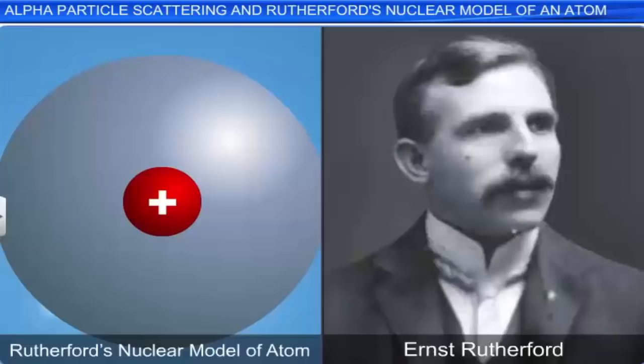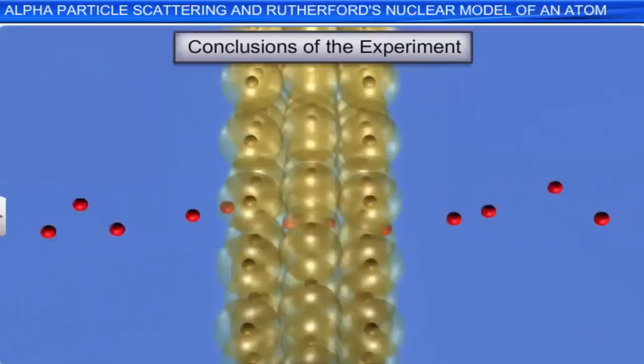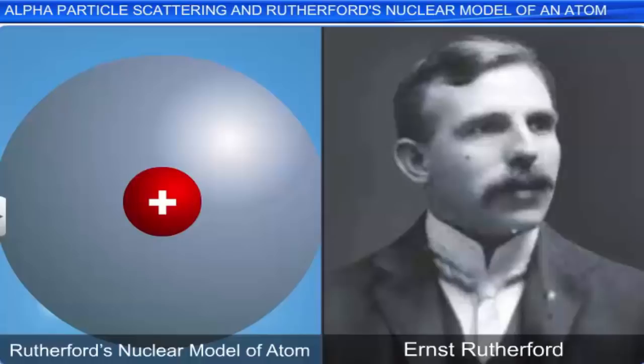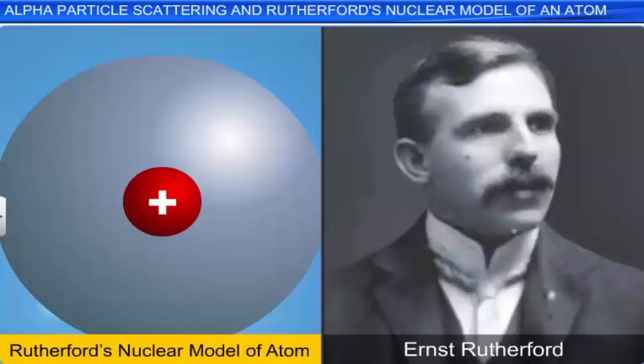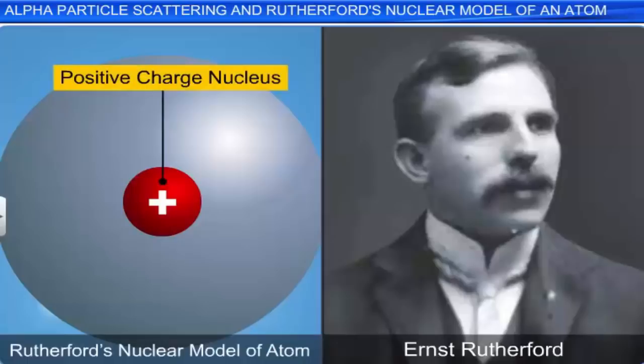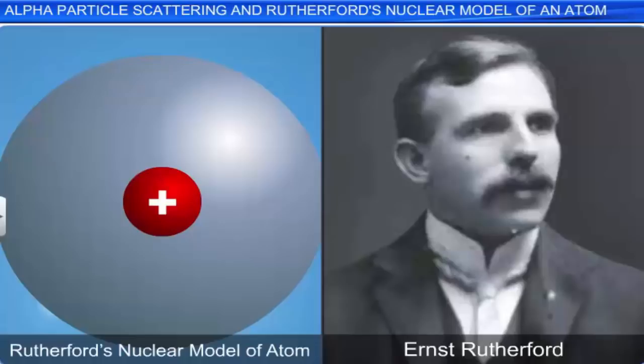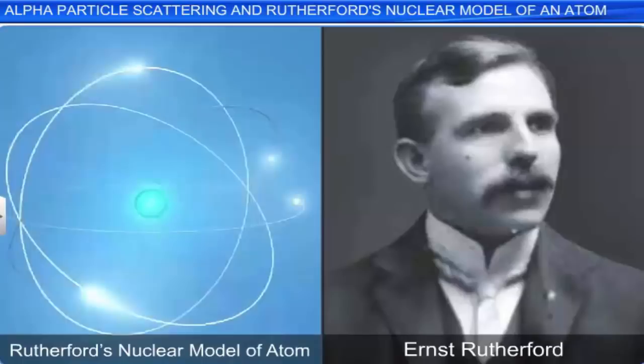Based on these assumptions, Rutherford proposed the atomic model, henceforth called Rutherford's nuclear model of the atom. The entire positive charge and most of the mass of the atom is concentrated at the center of the atom called the nucleus. He also proposed that the electrons revolved around the nucleus in orbits, just like planets revolving around the sun. Hence, Rutherford's atomic model is also known as the planetary model of the atom.